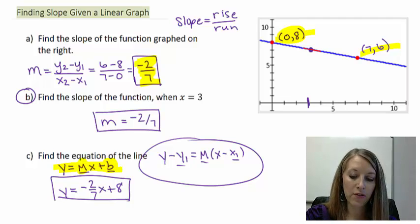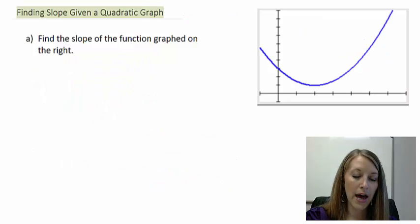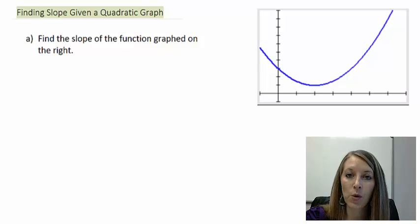So let's use this information to move on to my next example. So I have this example here. We want to find the slope of this function graphed on the right. Now I didn't give you any information whatsoever with this graph. I didn't denote any points, I didn't give you any equation. So therefore I left this question up in the air for you to think about.